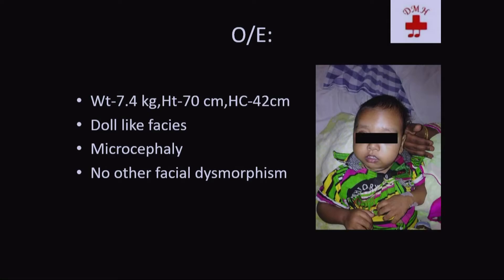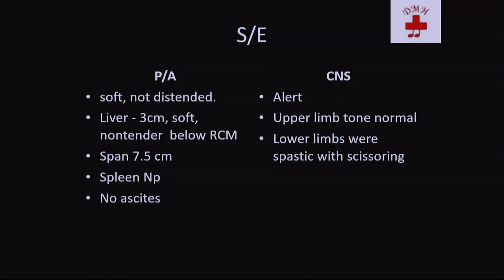On examination, the child had doll-like faces, microcephaly with head circumference of 42 cm — less than the 3rd centile — however no facial dysmorphism. Systemic examination: abdomen soft, non-distended. Liver was 3 cm enlarged, soft, non-tender, 3 cm below the right costal margin, with a span of 7.5 cm. Spleen was not palpable, there was no ascites.